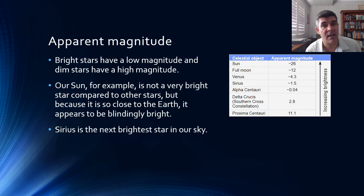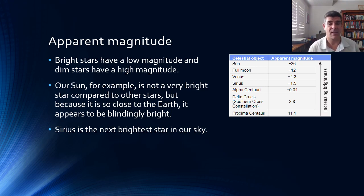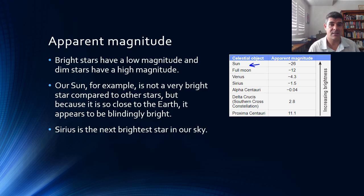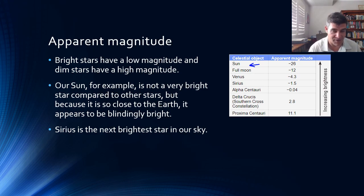To get a sense of the scale of brightness, astronomers have expanded on Hipparchus's original scale by including many more objects now that we've observed things with telescopes. Quite obviously, the brightest object that appears in the sky is the Sun. And because we started with 1 as stars that were bright, the Sun wasn't included on this particular scale. So in comparison to the brightest stars in the night sky, the Sun is massively bright — minus 26 on the apparent magnitude scale.